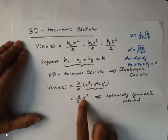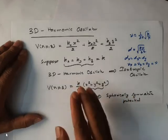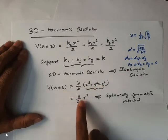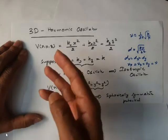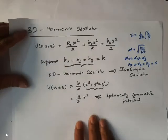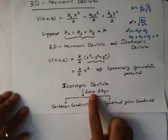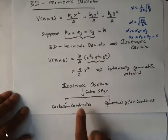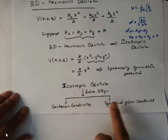Whenever potential energy depends only on the radial coordinate, we call that potential energy a spherically symmetric potential. We are going to handle the problem under spherically symmetric potential. You can use either Cartesian coordinates for the potential energy, or you can use spherical polar coordinates R, θ, φ. If you use Cartesian coordinates, you solve the Schrödinger equation using Cartesian coordinates; if you use spherical polar, you solve it using spherical polar coordinates.